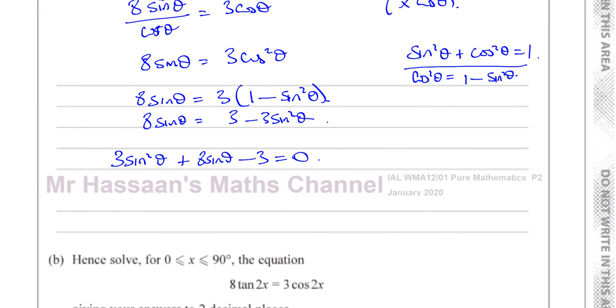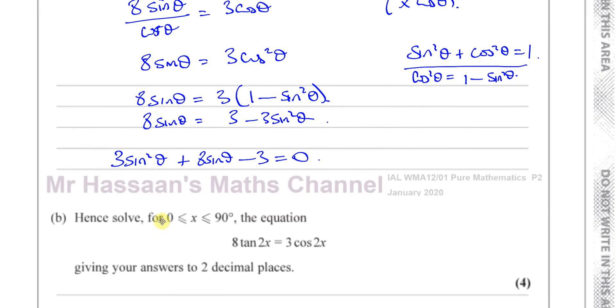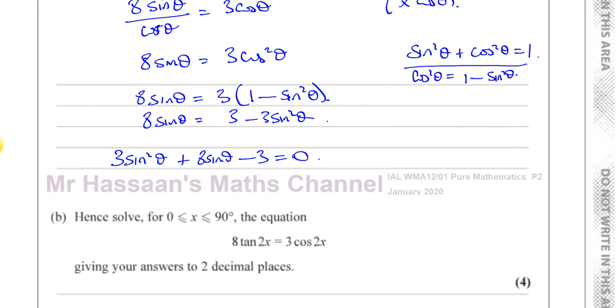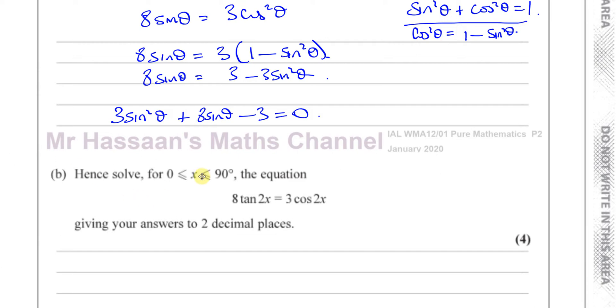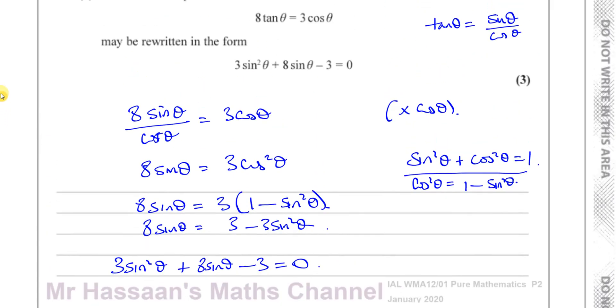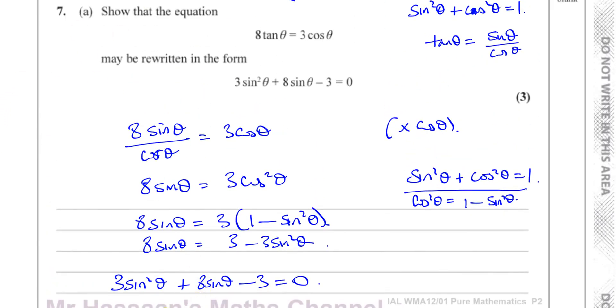Now for part B, it says hence, solve for x between 0 and 90 degrees, 8 tan 2x equals 3 cosine 2x. Now comparing this to what we have up there, you can see why they have the word hence. The word hence means using what you have just done.